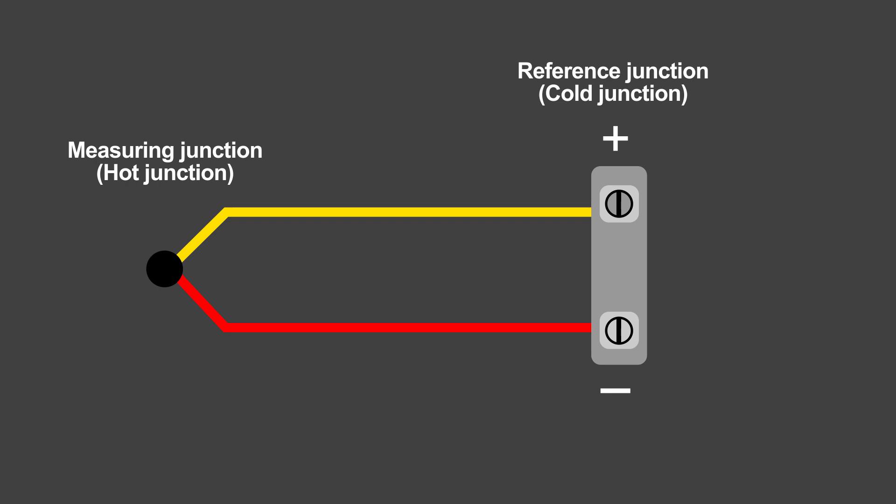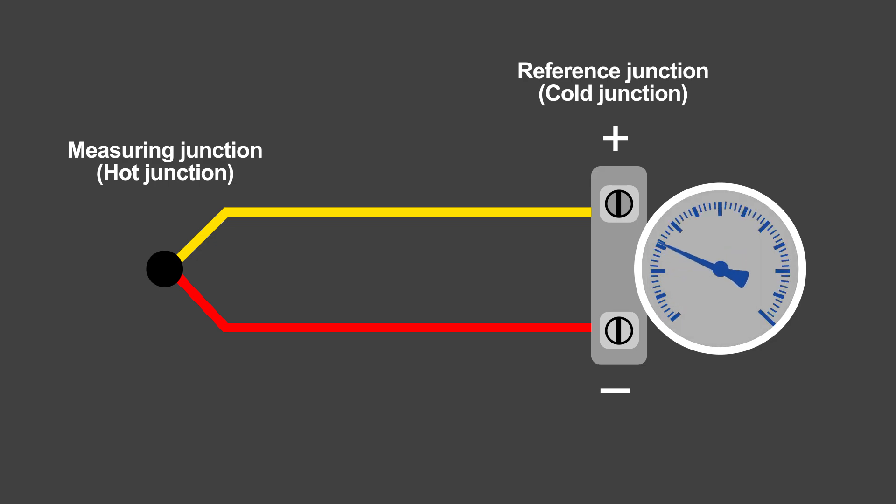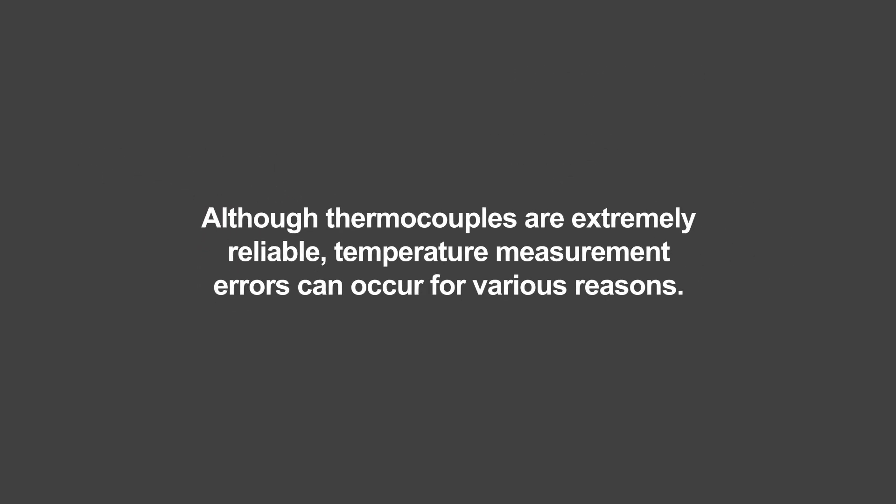The difference in the voltage generated at the two junctions, called the electromotive force, can be calibrated to give an accurate temperature reading. This is known as the CBAC effect. Although thermocouples are extremely reliable, temperature measurement errors can occur for various reasons.